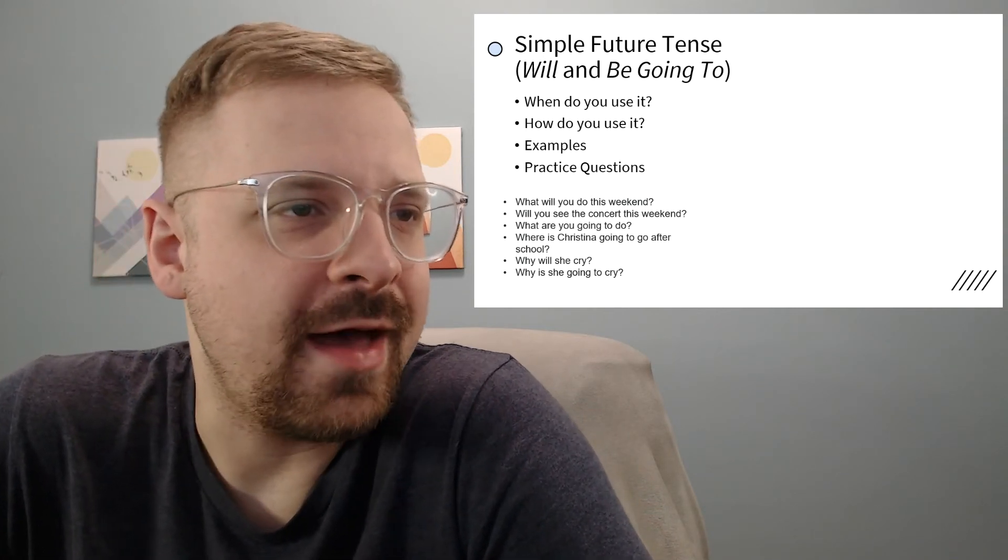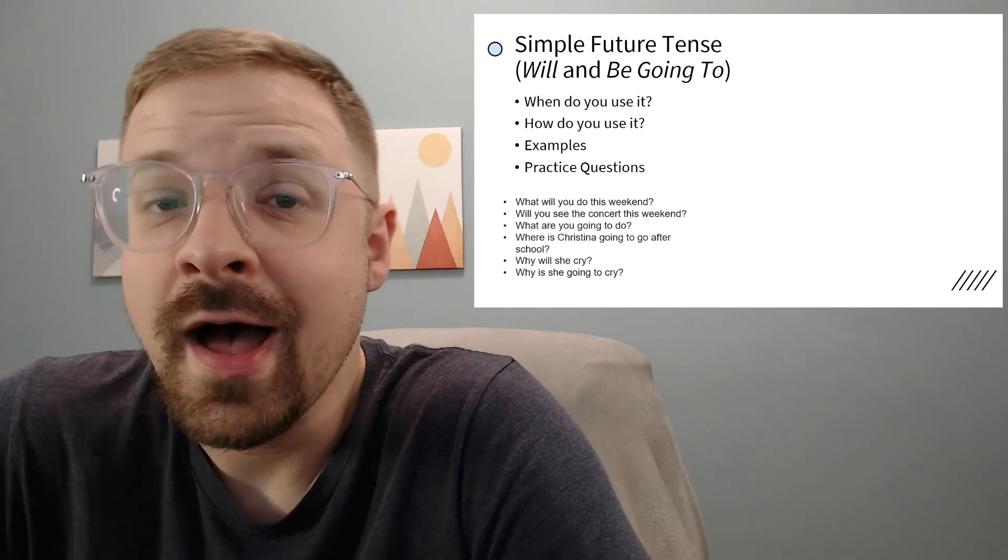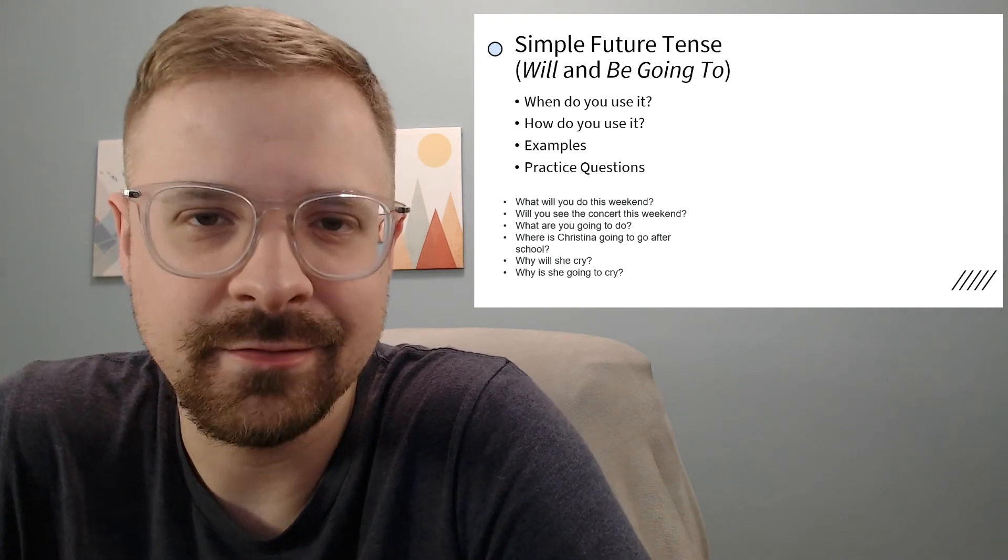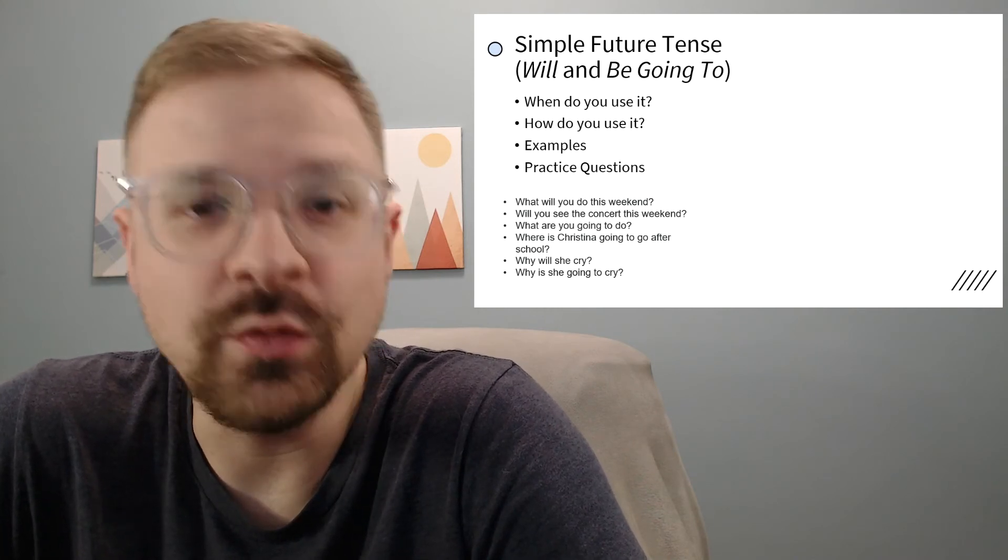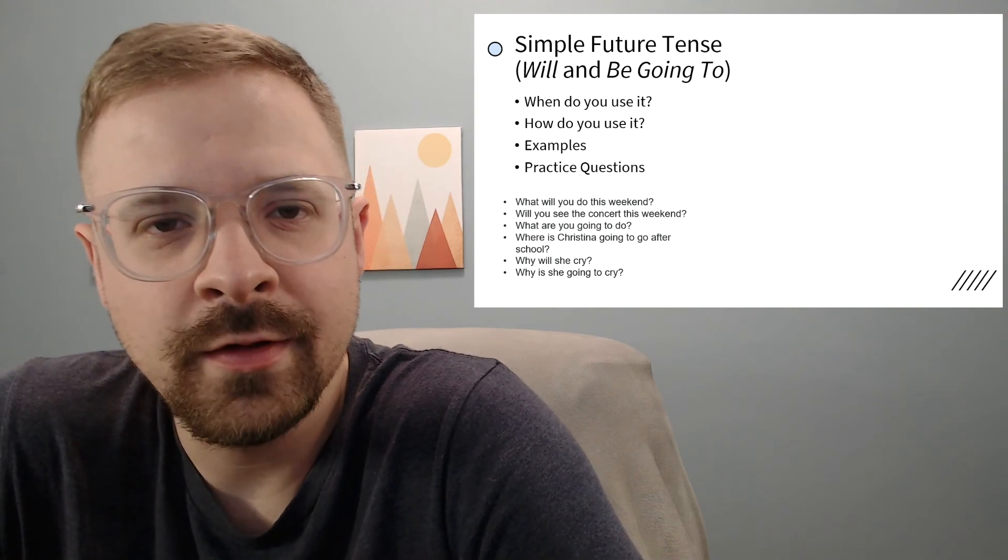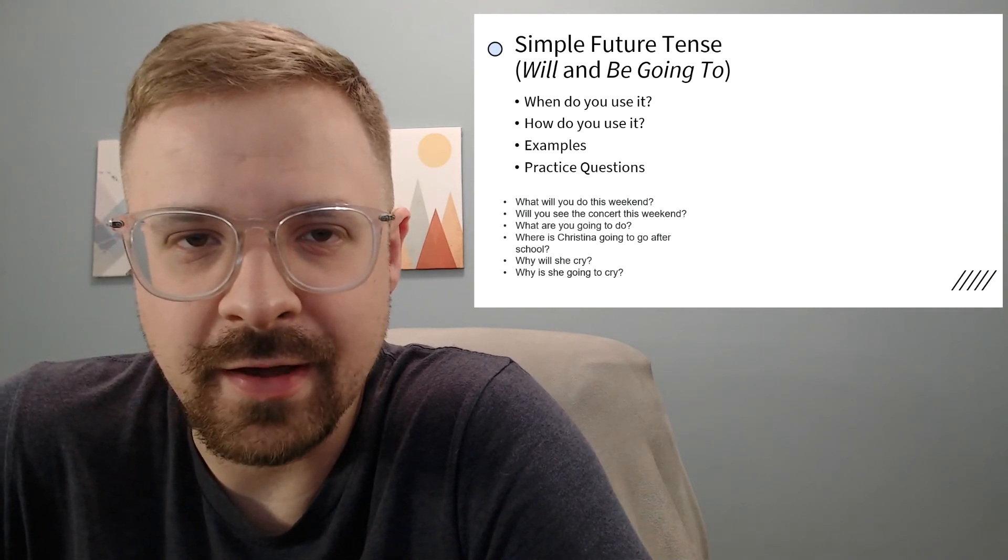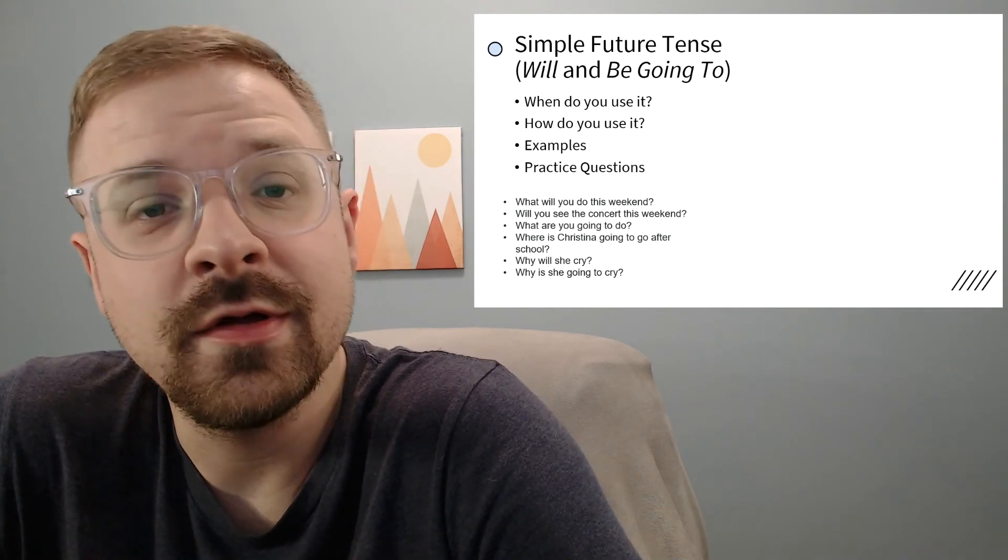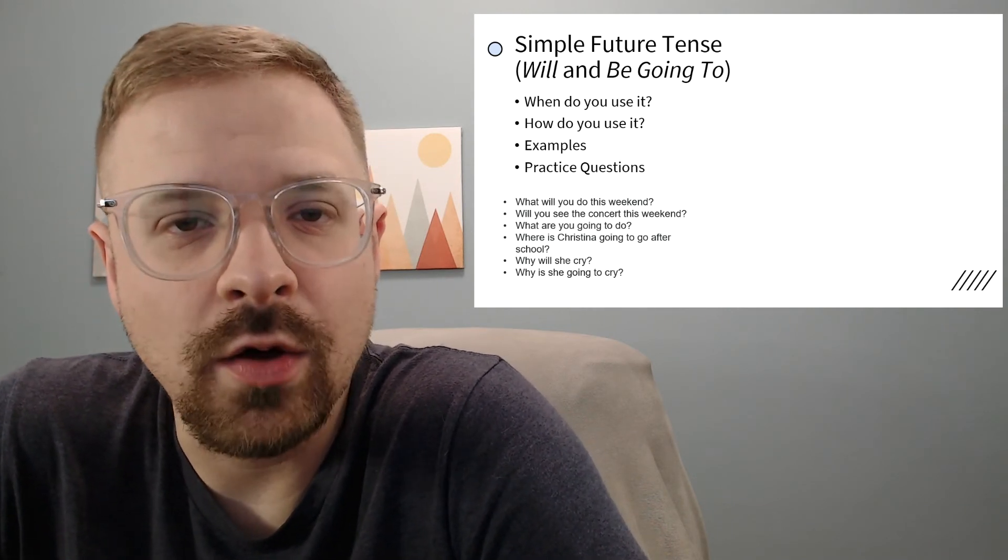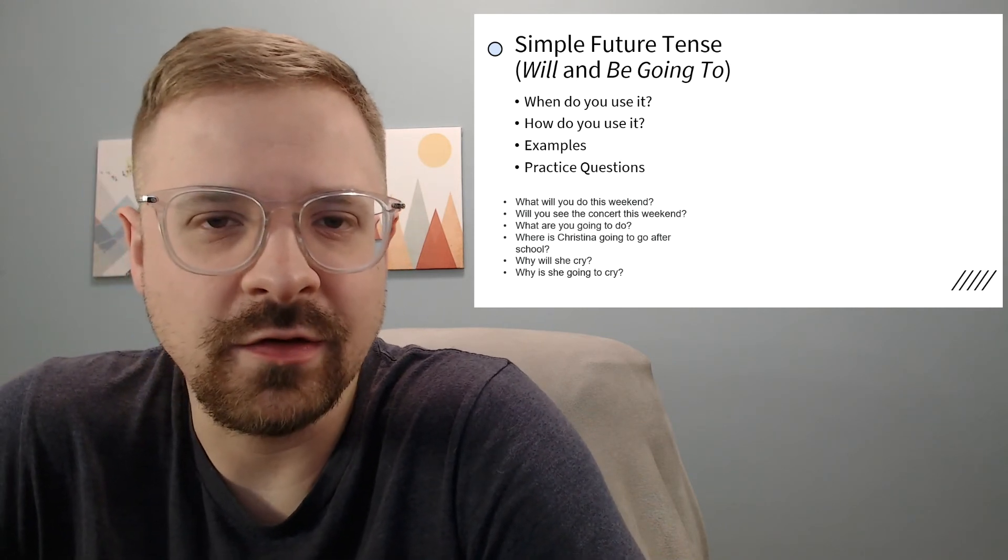Next we have: what are you going to do? I am going to watch TV. I am going to relax. I am going to eat spicy noodles. Where is Christina going to go after school? In this case we have a 'where' question, so that means our answer needs to have a place somewhere in there. Where is Christina going to go? She is going to go to the movie theater. She is going to go to Sogo. She is going to go to Taipei. She is going to go to her cram school. All of those are acceptable answers.